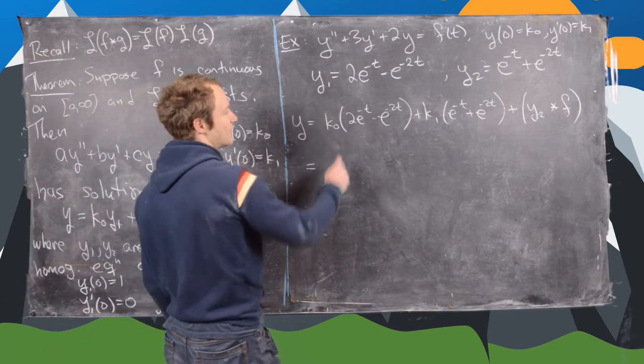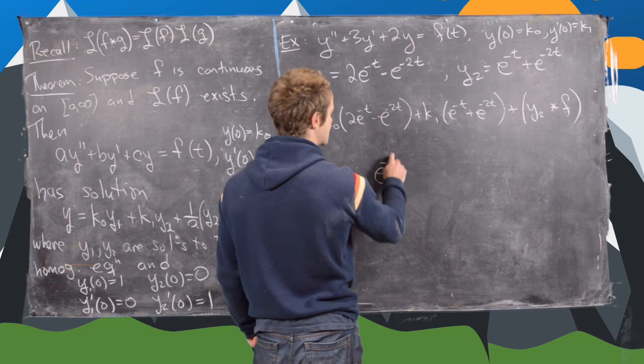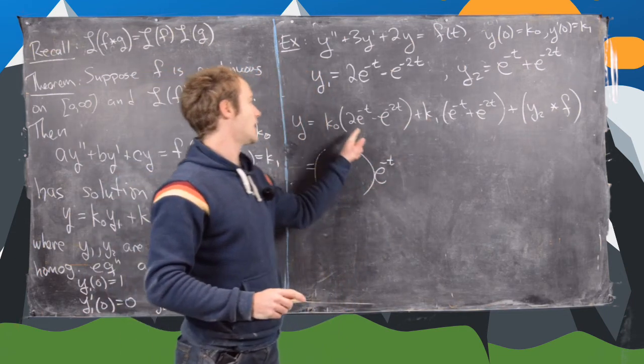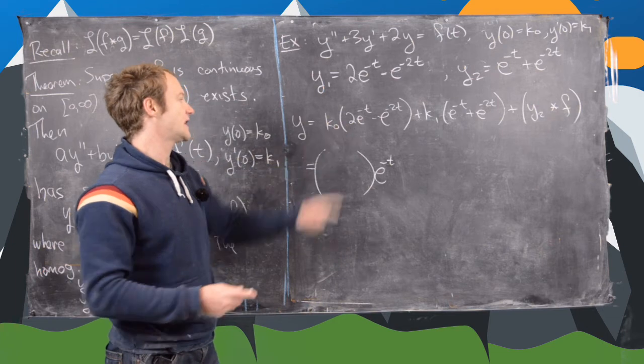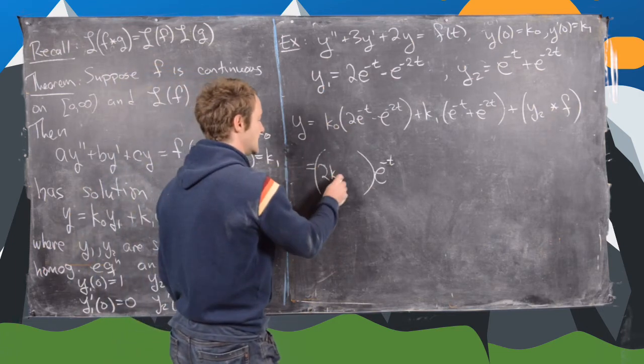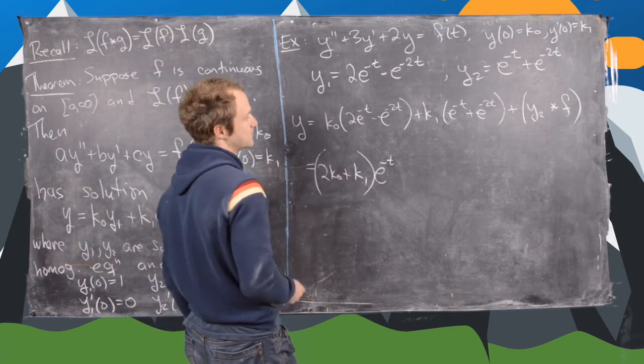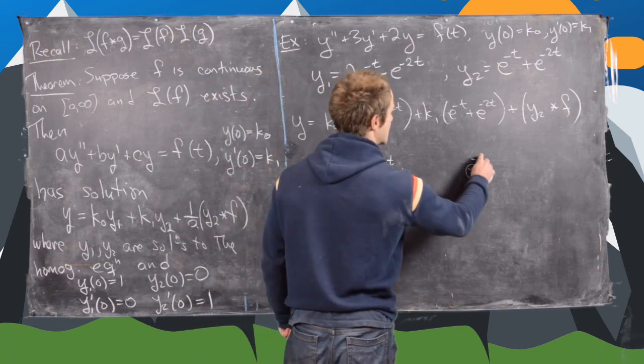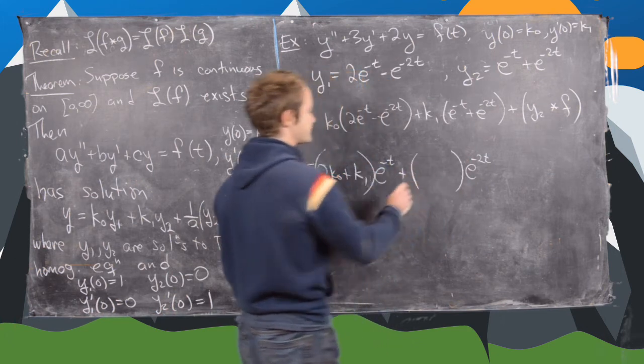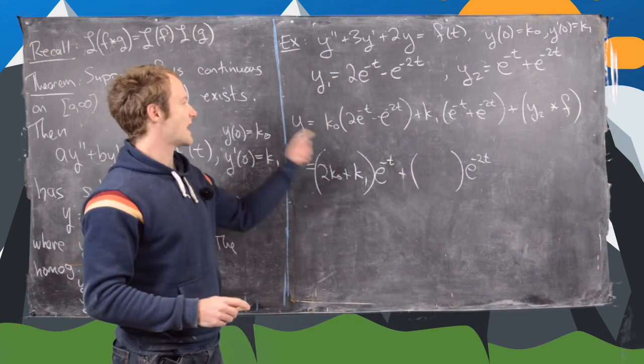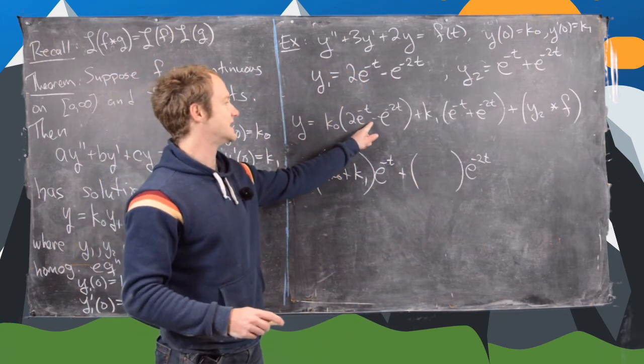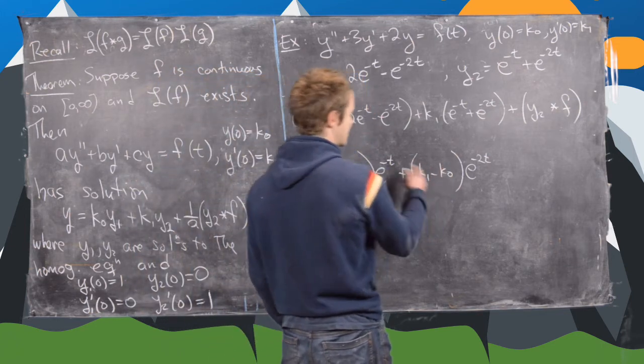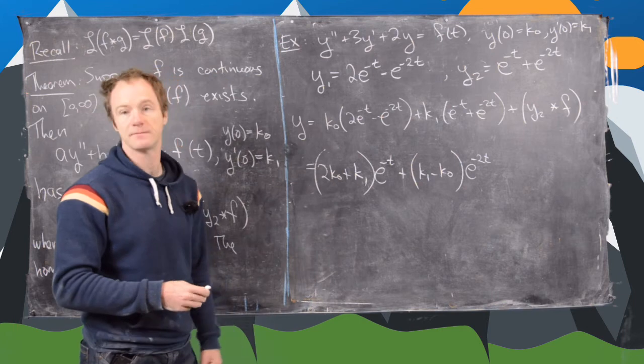So notice for the coefficient of e to the minus t, we'll get the following. So we have k1, and then we have 2k0. So we have 2k0 plus k1. Great. And now let's look at the coefficient of e to the minus 2t. Okay. So that is going to be minus k0 plus k1. So let's write that as k1 minus k0 because I don't like a hanging minus sign in front. Okay.